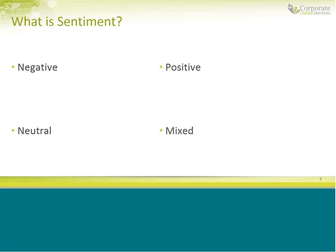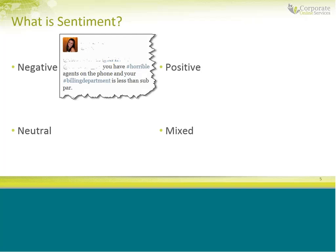A mixed post is a combination of sentiments — usually positive and negative at the same time in the same post, but it could be negative and neutral, negative and positive, positive and neutral, or even all three. It's most likely going to be positive and negative at the same time. The examples I'm going to show you are real — all from Twitter, though this works just as well for blog posts or any other form of conversation. I removed any personal information, but they are real and unaltered.